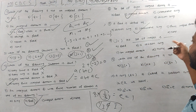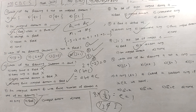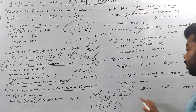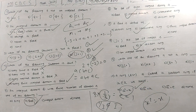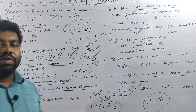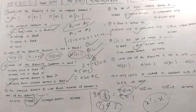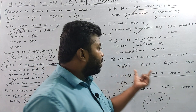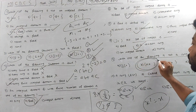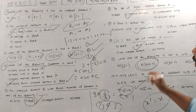The set (I, +, ·) is a division ring and integral domain. Also, a ring (R, +, ·) is called a Boolean ring where every element satisfies a² = a. The answer to the Boolean ring question is B.